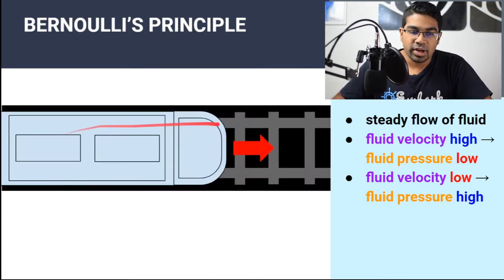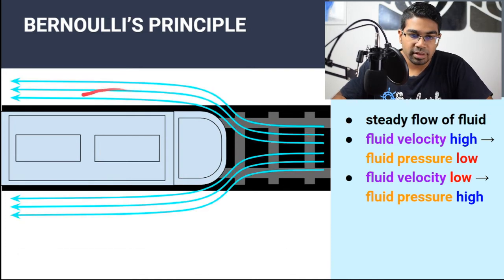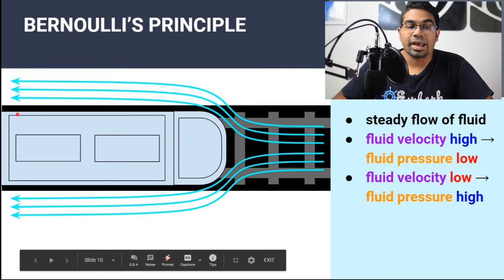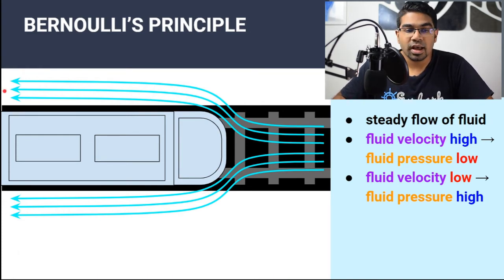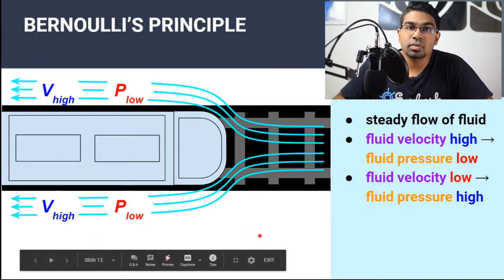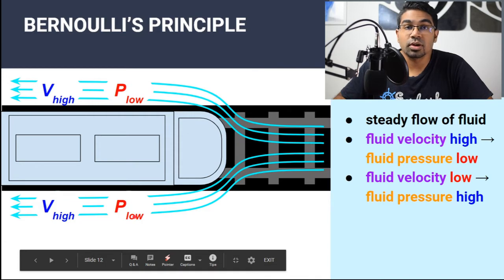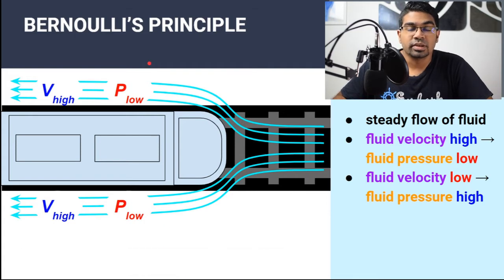Let's look at another example. Let's say this is an aerial view of a train at a train station. When the train is moving forward, air is going to be moving very fast around it. So the region just around the train will have fluid with high velocity. When there is high fluid velocity, there will be a region of low pressure. And when there is a region of low pressure, the region just outside this, by comparison, will have high pressure. So this will cause a movement of air towards the train. This is the reason for the yellow lines in the train station — it's for safety. Once you cross the yellow lines, you will reach a region of low pressure, and there will be a high pressure pushing you towards the train. It's very dangerous.